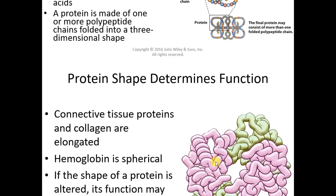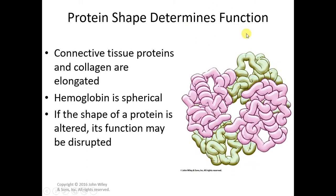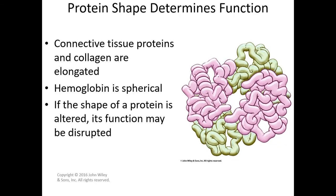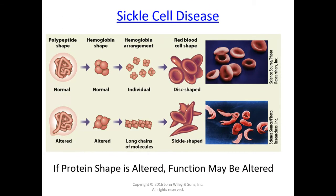The final function of the amino acid is determined by the shape, which is determined by the sequence of amino acids. Sickle cell disease is a disease in which the importance of that sequence becomes extremely apparent. Click into this link to see a very brief video on sickle cell disease.